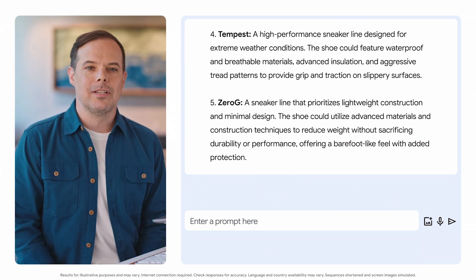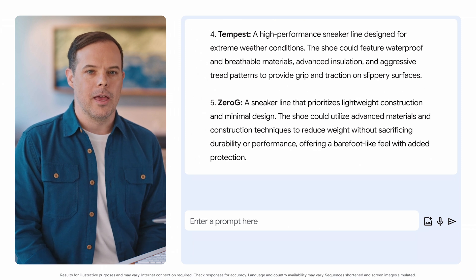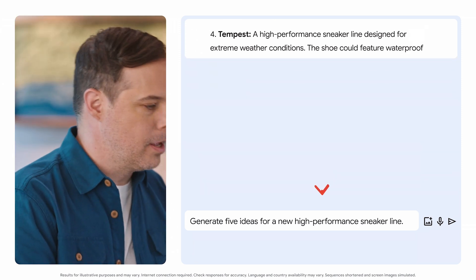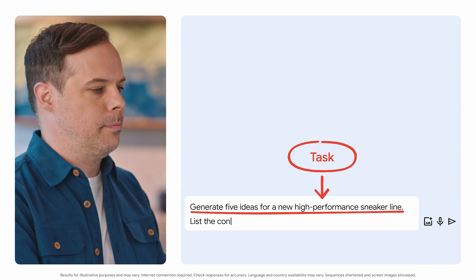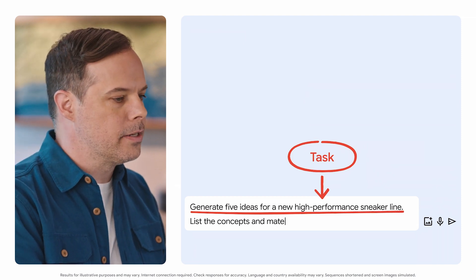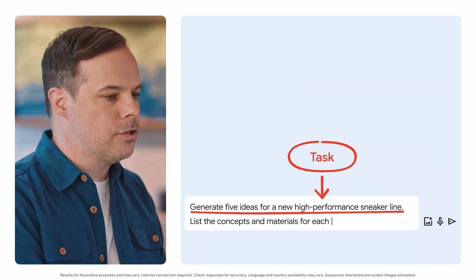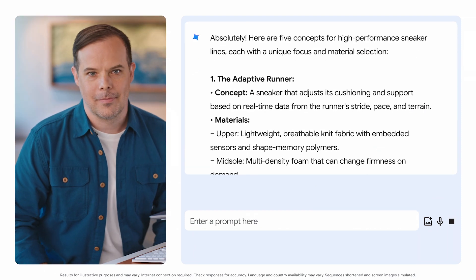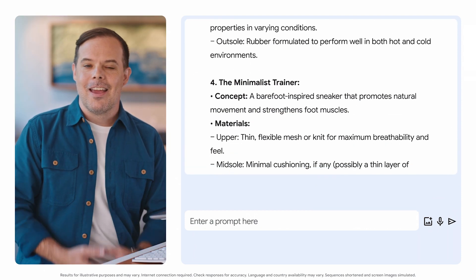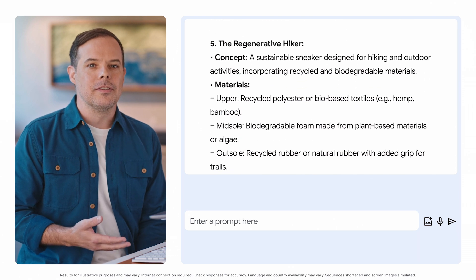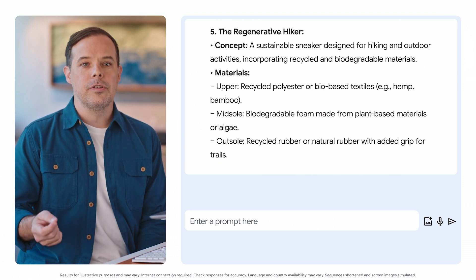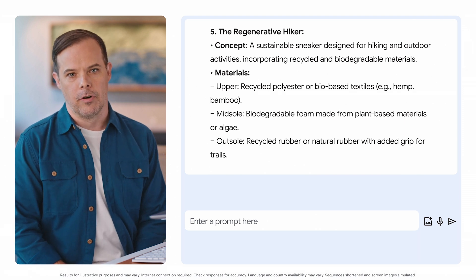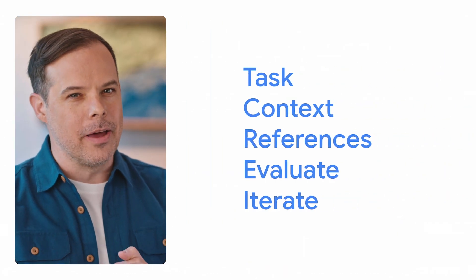Let's add some more details like our desired format and a more specific task for the tool to complete: list the concepts and materials for each sneaker in an outline. That's much better. Now we have a set of unique ideas for a sneaker line that includes the materials for each shoe, and it came in our preferred format. I think we can do even better.